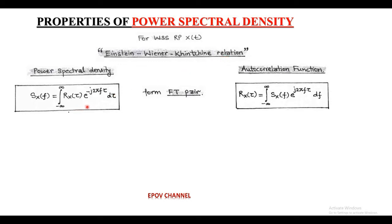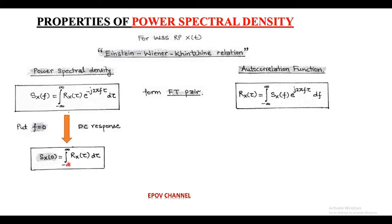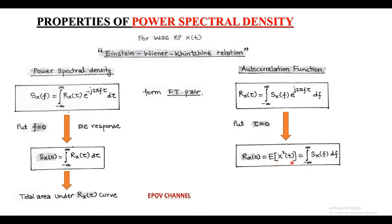In the case of power spectral density, we can find the DC response by putting f = 0, giving S(0) = ∫ r(τ) dτ, which represents the total area under the autocorrelation curve. Next, in the expression of the autocorrelation function, we put τ = 0, which gives the mean square value of input random process x(t): r(0) = E[x²(t)] = ∫ S(f) df. This represents the total area under the power spectral density curve.